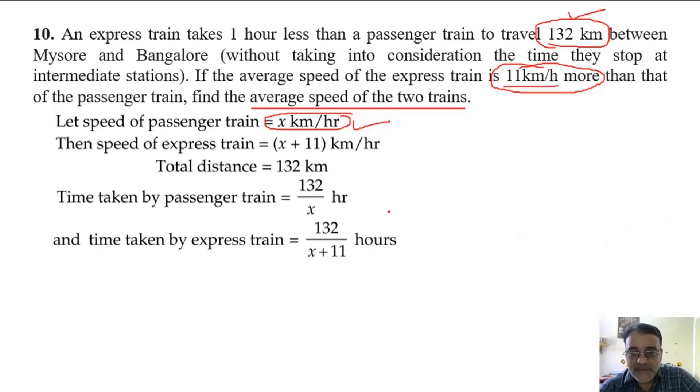So we got these two times, one by passenger train and one by express train. And the difference between these two times is 1 hour. Now you have to write the term in which the denominator is lowest first. In which term is the denominator smaller? 132 by x, right.